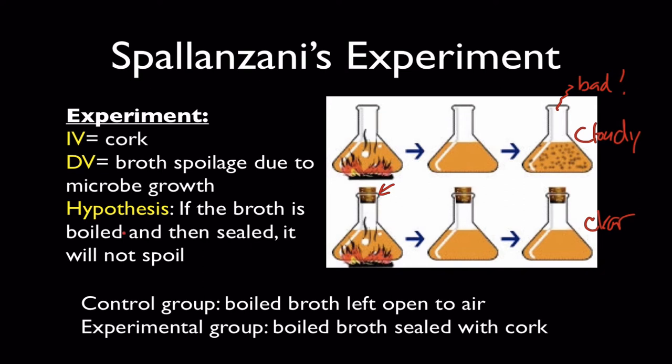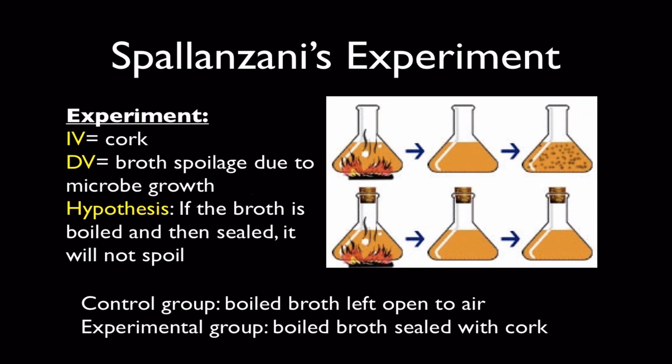His hypothesis was that if you boiled the broth and then sealed it, it won't spoil — and his experiment confirmed this. The independent variable was whether or not the flask was sealed with a cork. The dependent variable was whether or not the broth went cloudy, measuring microbial growth based on cloudiness. The unsealed flask was the control and the sealed flask was the experimental group.